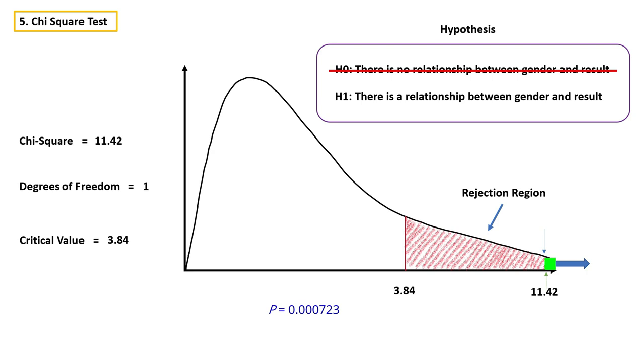So this feature is very very important, and we can use this feature to build a machine learning model. That's it — that's all about chi-square.